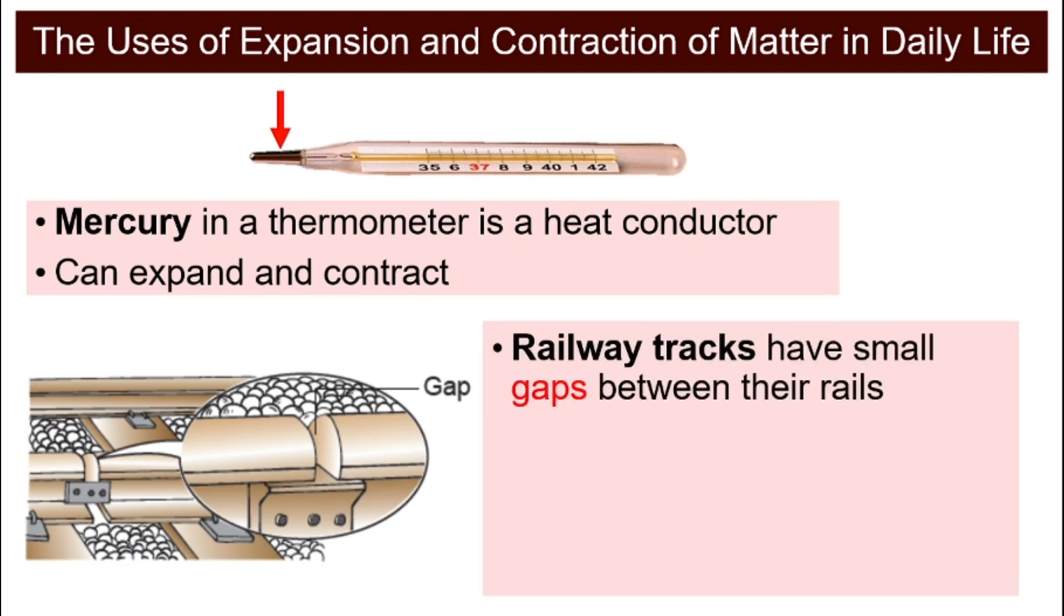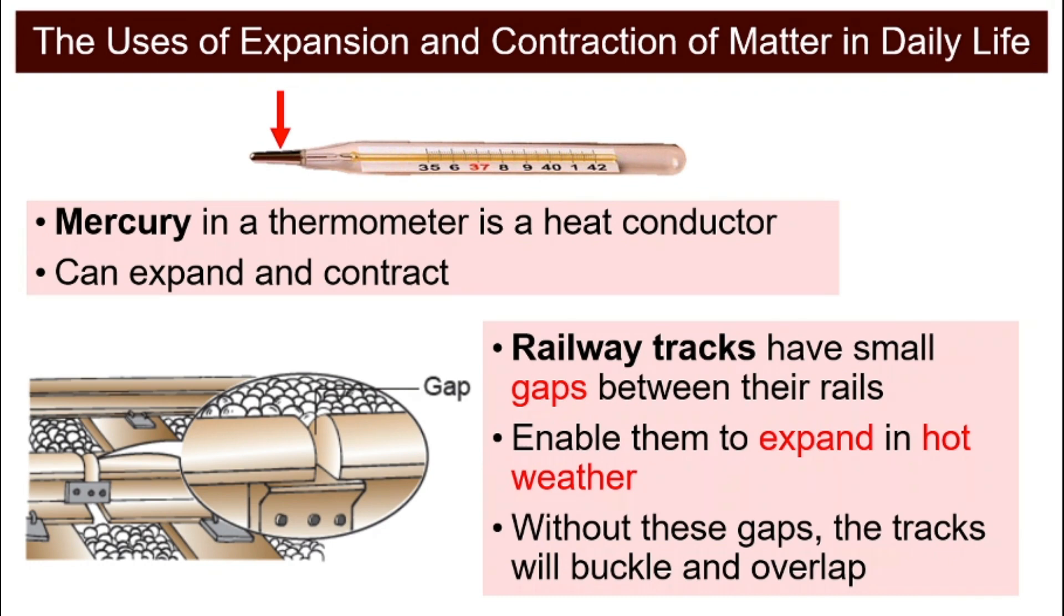This is railway tracks where the train moves on. If you look closely between the rails, there will be a space called the gap. What are the uses of this gap? It is very important when they build the railway tracks to have these gaps. Why? Because during hot weather, these railway tracks will expand and they need space in order to expand and not change the shape of the railway track. If we do not have these gaps, the tracks will buckle and overlap and the train might not be able to stay on the track and it can be very dangerous.